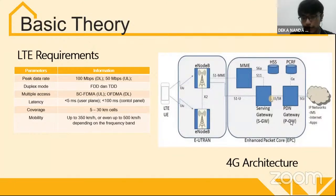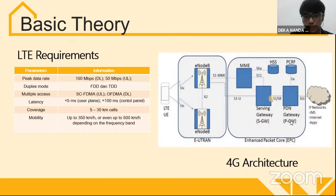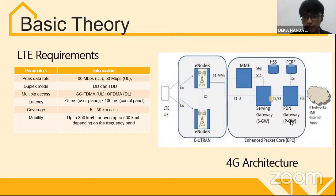This is the 4G architecture. There is UE (user equipment) for transmitting and receiving signals from the eNB. The eNB is the base station. There are MME for controlling LTE network nodes, HSS for saving user data, and PCRF for accounting and charging billing. The Serving Gateway handles packet routing and forwarding, and the PDN Gateway is for controlling and charging.